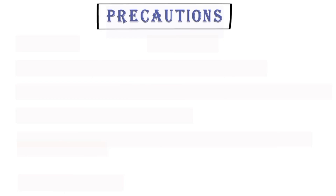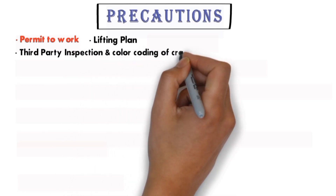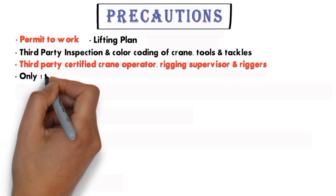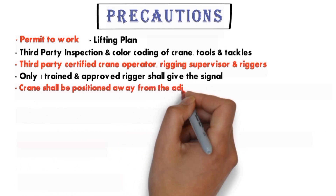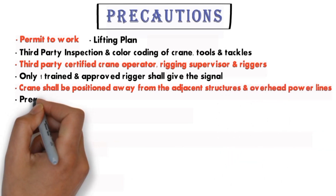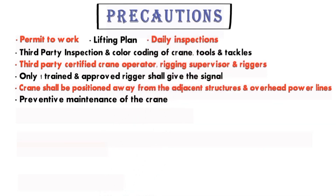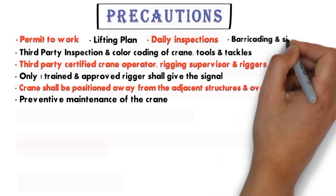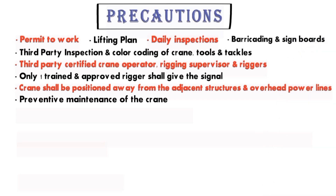Now let's see the precautions for lifting. Before starting work you must have a PTW (permit to work), a lifting plan, a TPI certificate (third party certificate), and color coding of crane tools and tackles. You must check the third party certificates of the crane operator, rigging supervisor, and riggers. Only one trained and approved rigger shall give signals to the crane operator. When positioning a crane, ensure there are no nearby adjacent structures or overhead power lines. Preventive maintenance must be done, and the crane operator must inspect the crane daily. The surrounding lifting area must be barricaded with a lifting signboard so adjacent workers know entry is strictly prohibited.